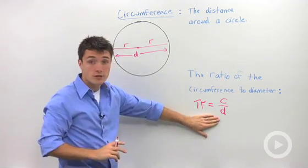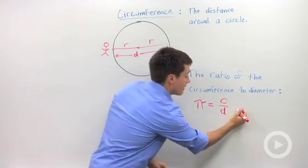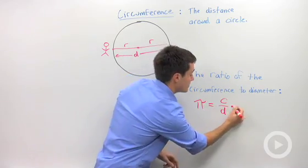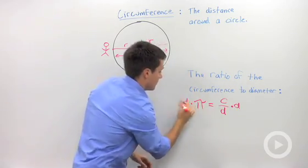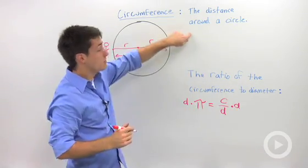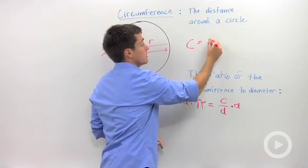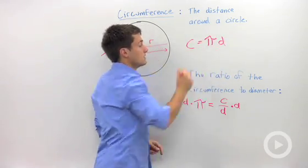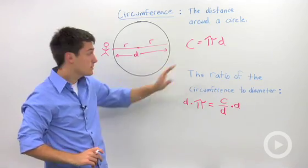If I solve this equation for C, that is if I multiplied both sides by D, then I could write circumference as pi times diameter. So that's one formula for circumference.